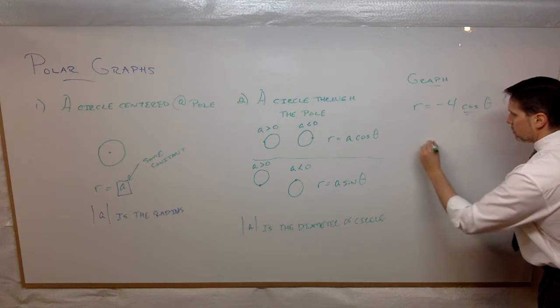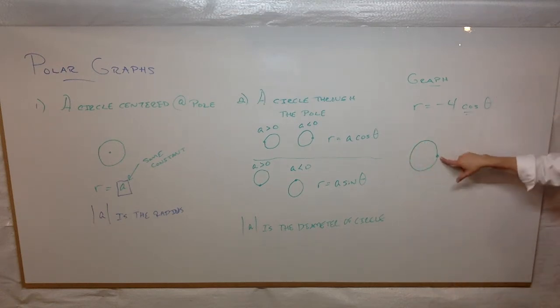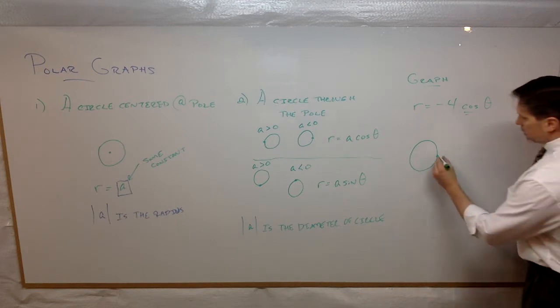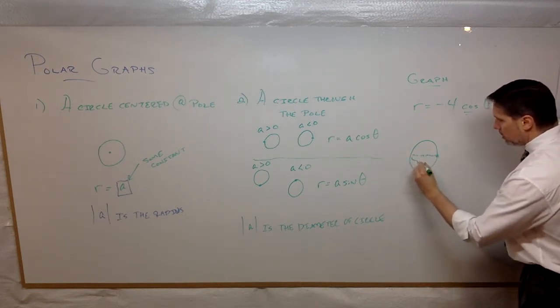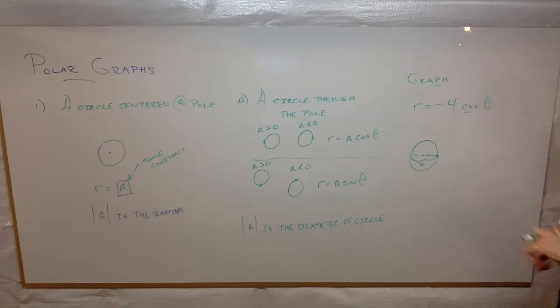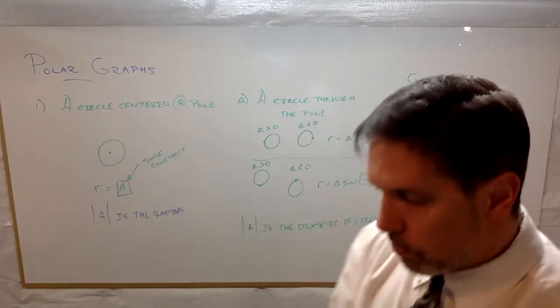So, what do I know about this picture? When I go to my calculator, I know it's going to look something like this with diameter of four. So, that will definitely be four units long. All right. So, when we go to graph, kind of already spoiled it.